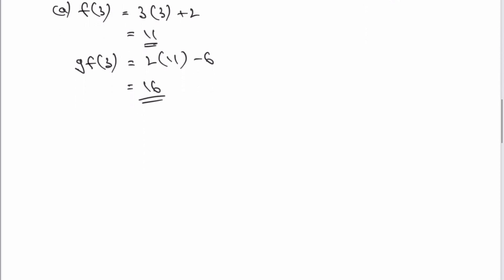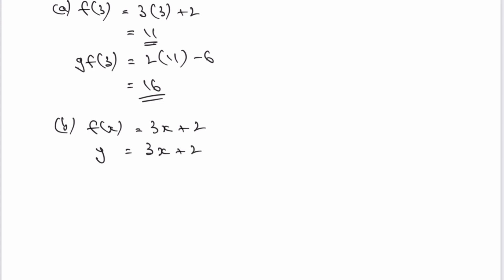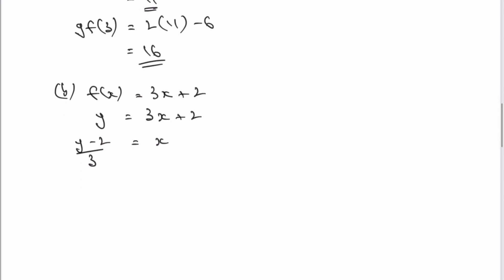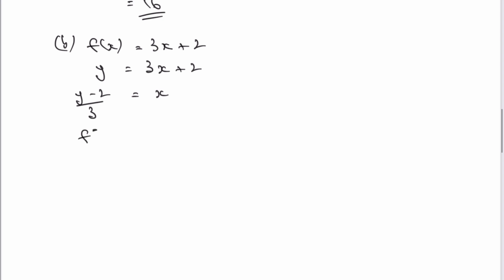So I'll write them out properly on the screen itself. So I've got the function of X is going to equal to three X plus two. What we need to do then in the method is that we make this Y equals three X plus two. And then we make X the subject of this particular formula. So X equals Y minus two divided by three. And when we finish that, we then just convert everything back. So we get, therefore, the inverse function of X is equal to X minus two over three.